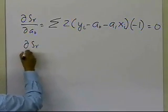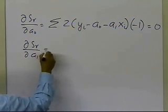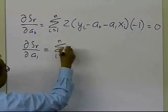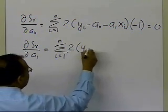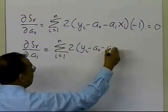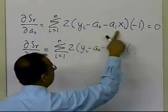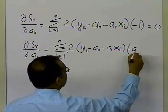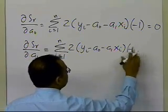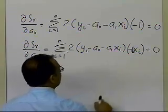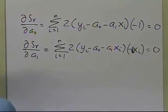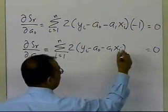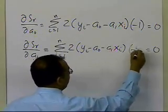And then del SR divided by del a1, summation i equals 1 to n, will be 2 times (yi minus a0 minus a1·xi) times the derivative of this quantity, which will be minus xi, equal to 0. Because what we are doing is finding the derivative of the quantity in the bracket with respect to a1, and that will be just minus xi.